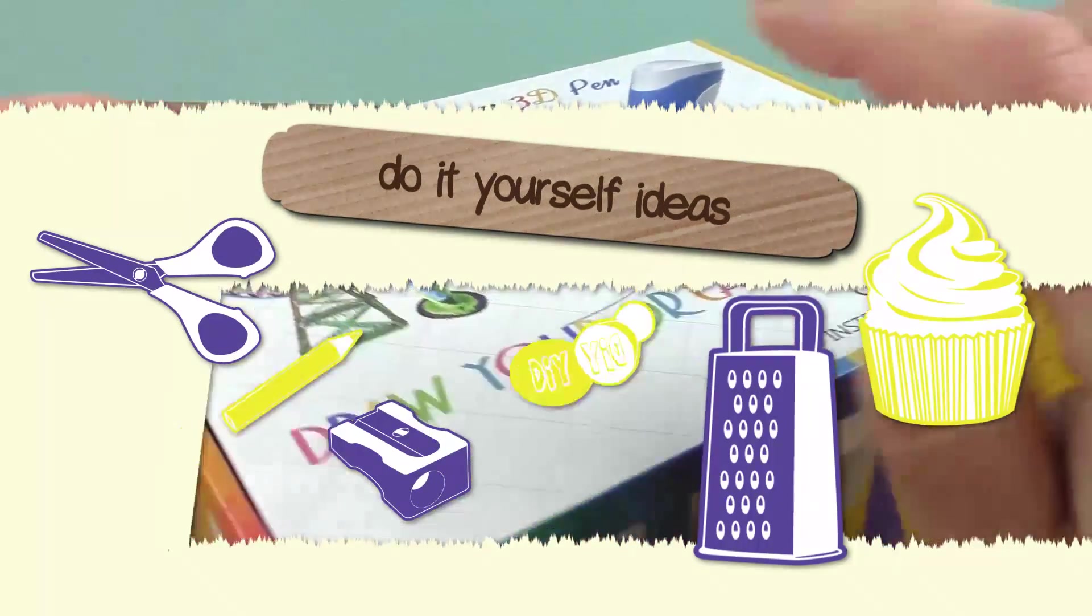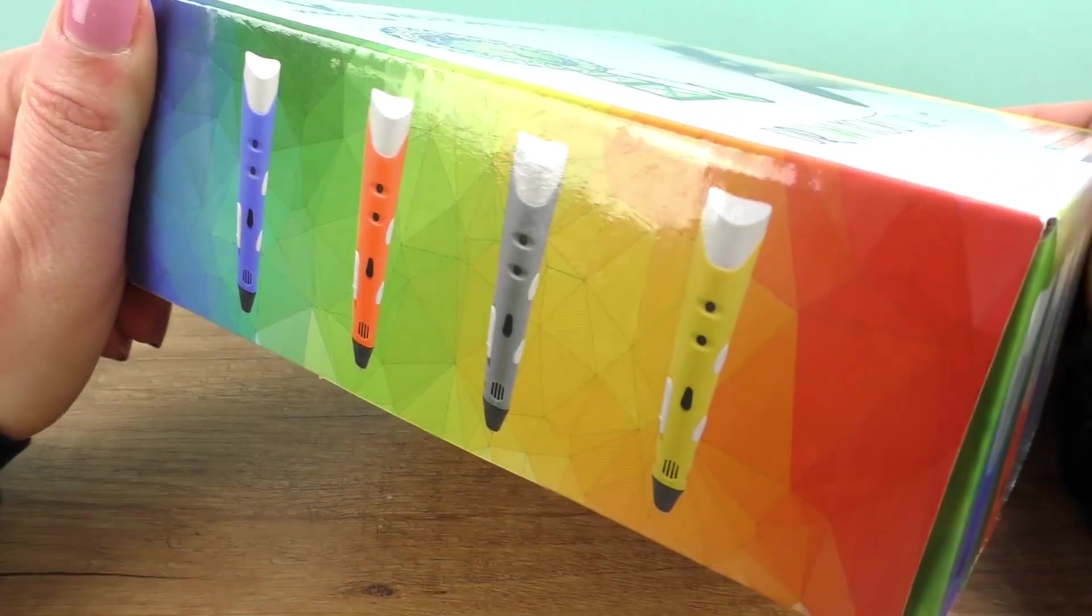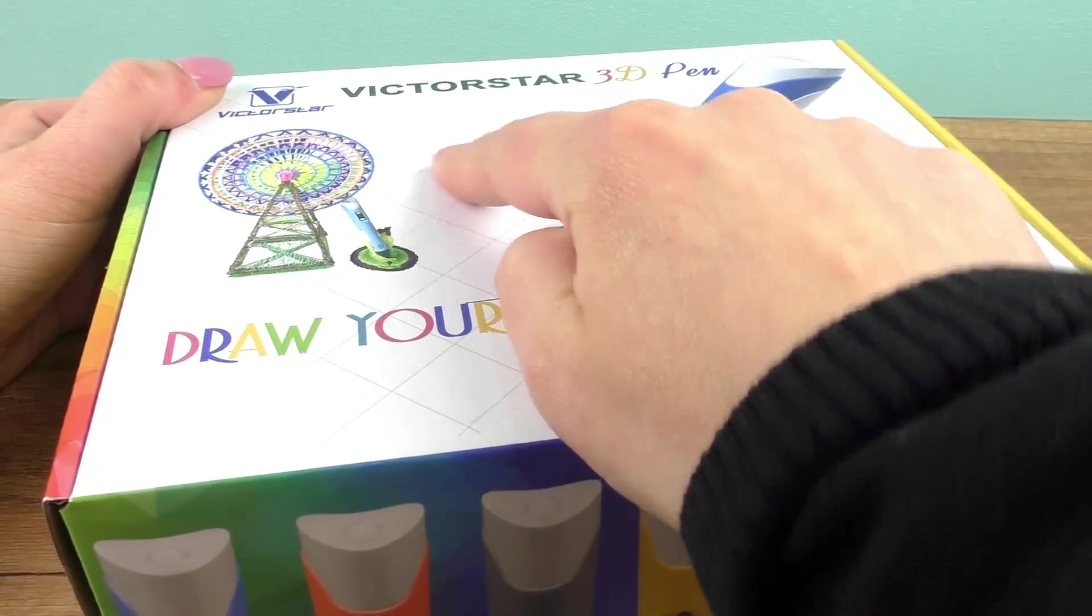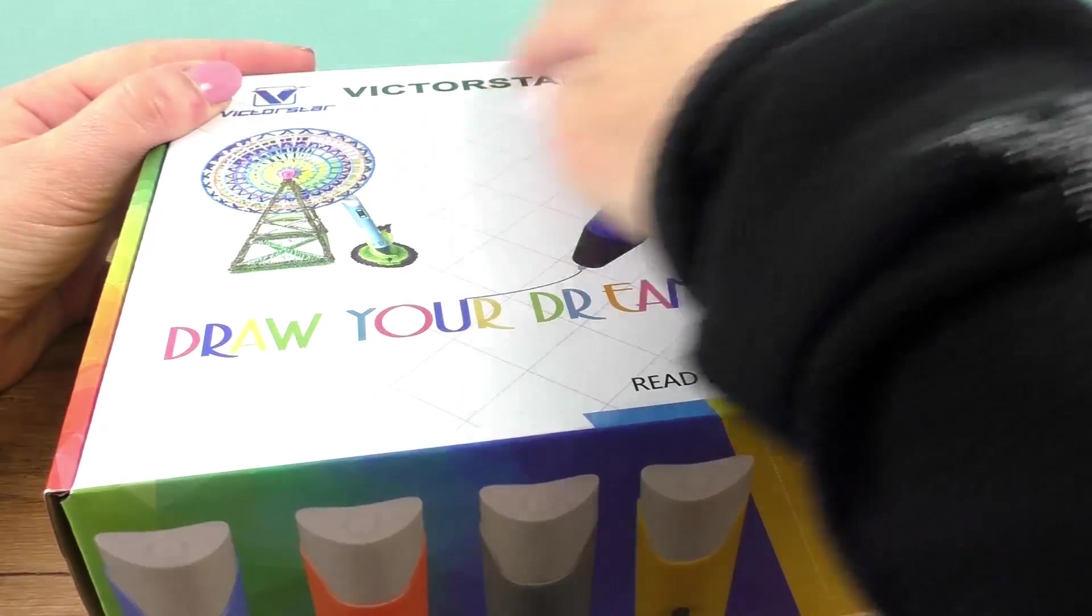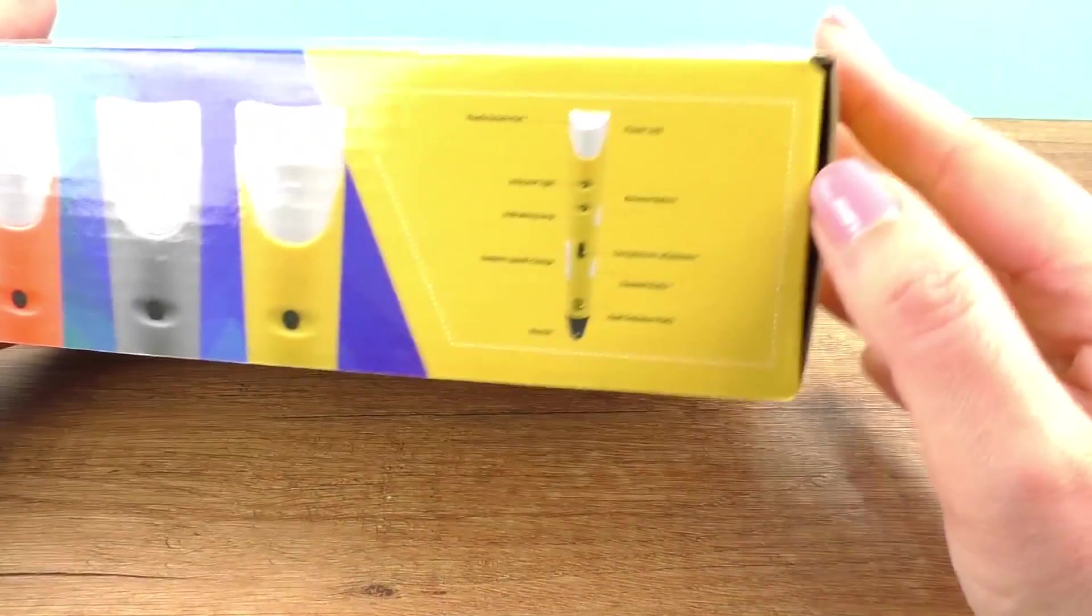So this is from Victorstar. I got it online, I think it was Amazon. You should be able to find it if you search for 3D Victorstar. You can see what the box looks like. Anyway, here we have pretty much all the parts.